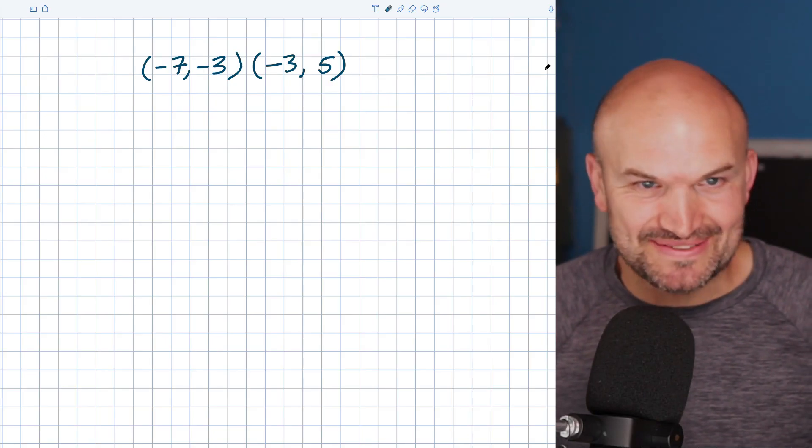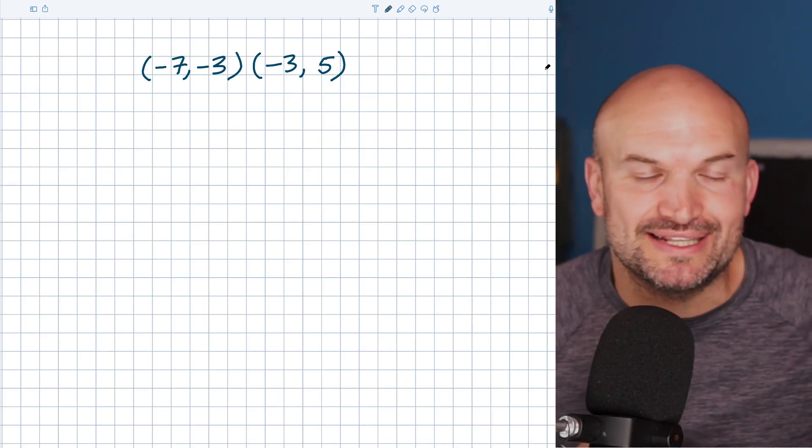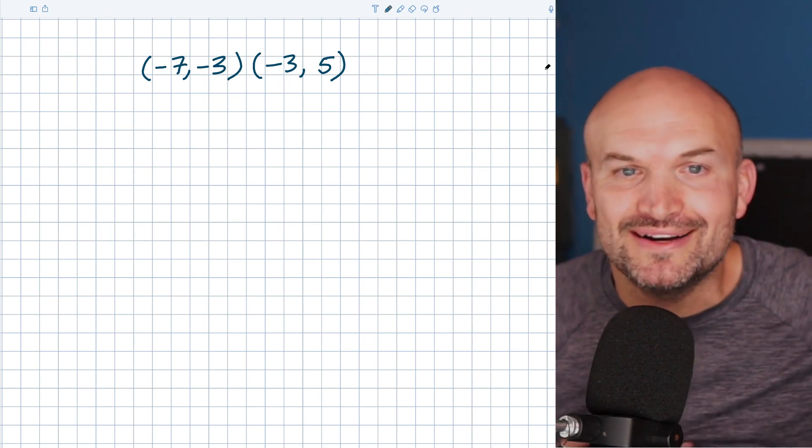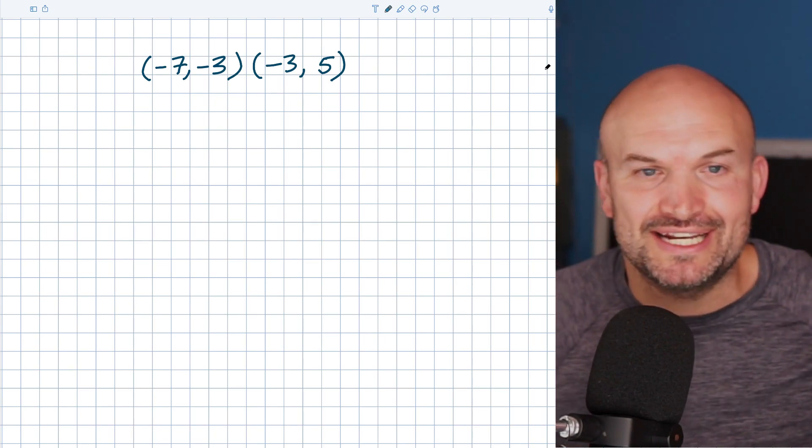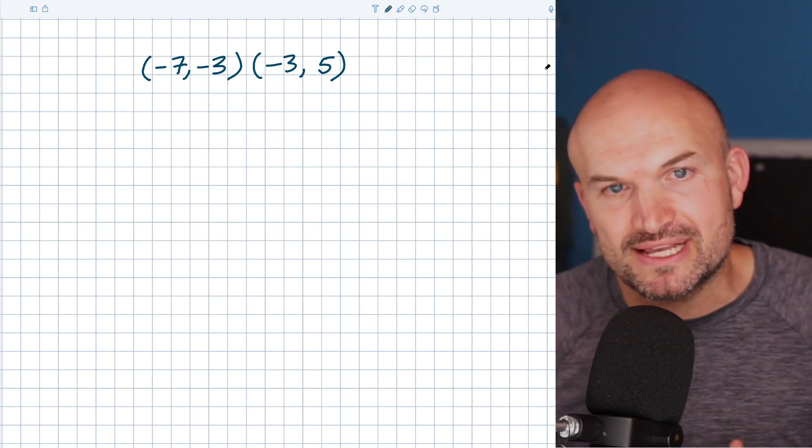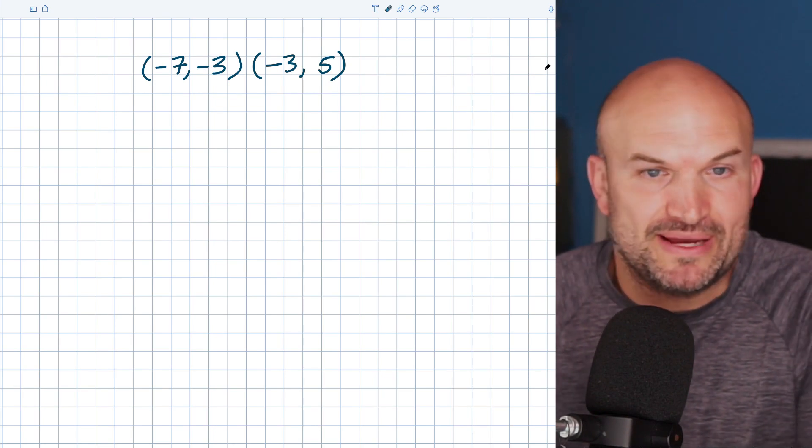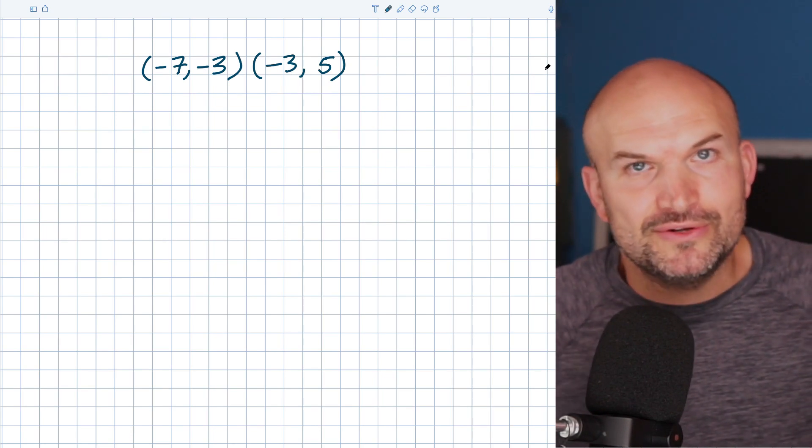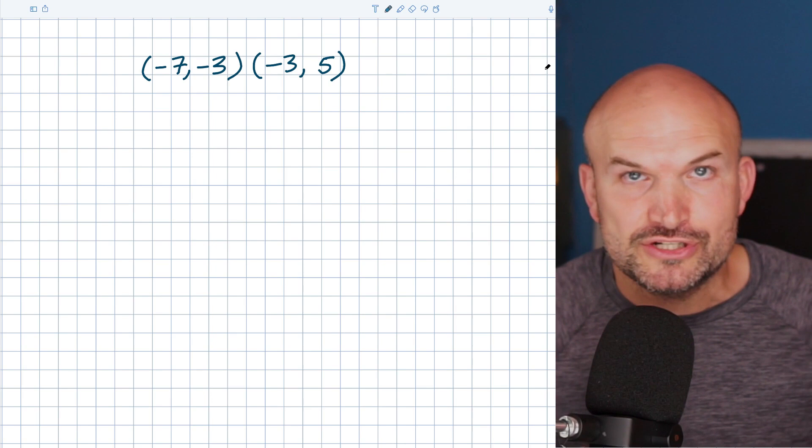You got to be aware of the negatives. I think if there's probably one problem that gets students more mistakes, it's when we have negatives finding the slope. Because finding the slope is relatively straightforward, it's relatively basic. If you can remember the formula, then you can find the slope, right? Change of the Y over the change of X.